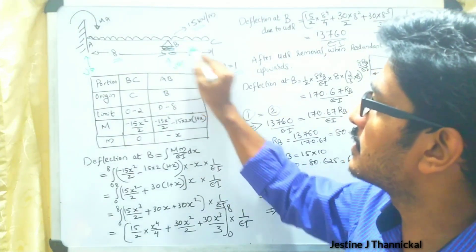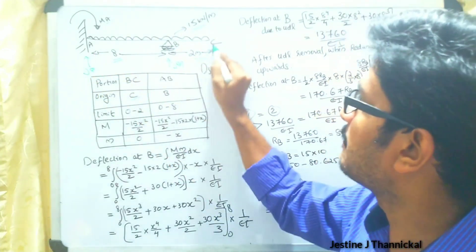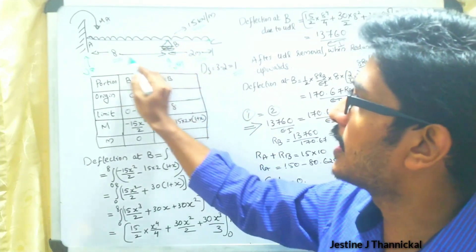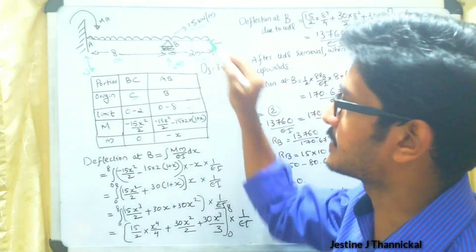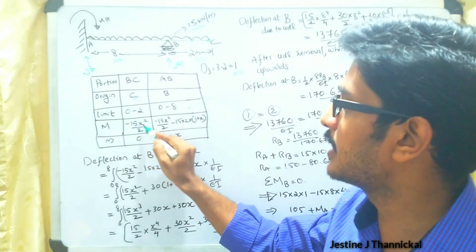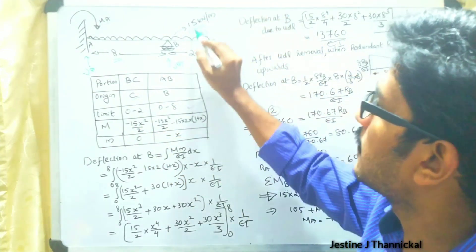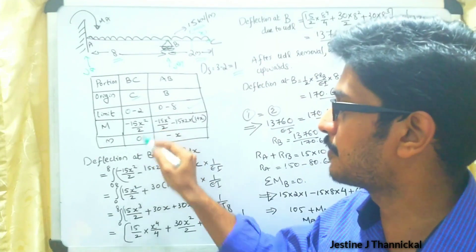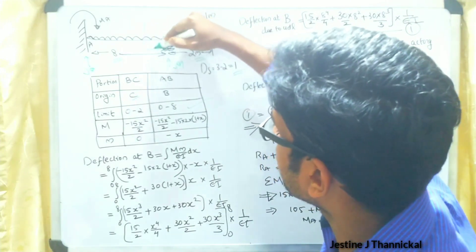First, we consider two segments: BC and AB. The origin of BC is C and the origin of AB is B, with limits 0 to 2 and 0 to 8 respectively. Taking a section in segment BC at distance x from C, the bending moment value becomes minus 15x² by 2. Similarly, taking a section in segment AB at distance x from B, the bending moment value is again minus 15x² by 2.